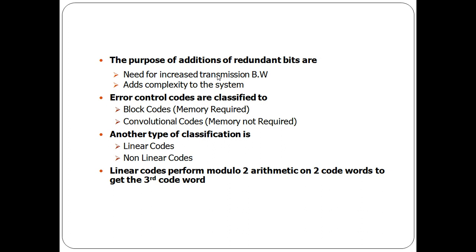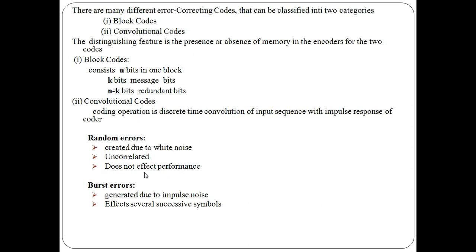The classification of error control codes: we can classify them into two main types — block codes and convolution codes. Another classification is linear vs. non-linear. Linear codes are those for which performing modulo-2 arithmetic operation between two code words produces another valid code word, meaning the result is also a linear code word.